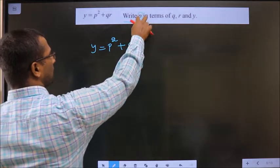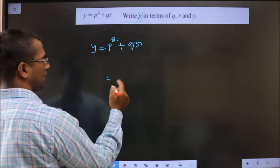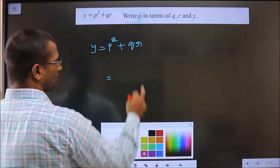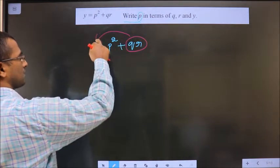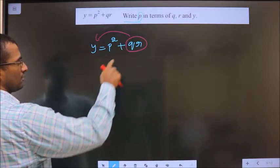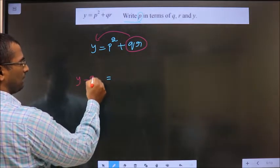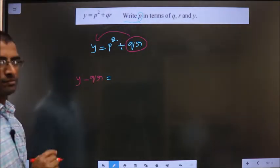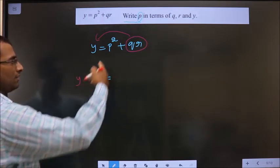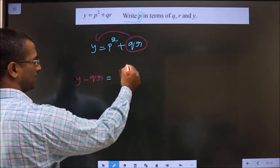To make p the subject, step 1: Send this qr to the other side. So here plus qr shifted will result in minus qr. And on this side leaving with p squared.